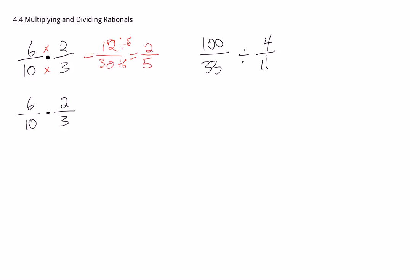If we simplify, basically what we want to do is see if we can divide out any common factors on the top and the bottom. So if we change 6 to 3 times 2, and change 10 to 5 times 2, you can see we're getting some common factors on the top and bottom. We could cancel out a 2 on the top and bottom, and we could also cancel out a 3. So our final answer, we just have a 2 left on top and a 5 on the bottom.